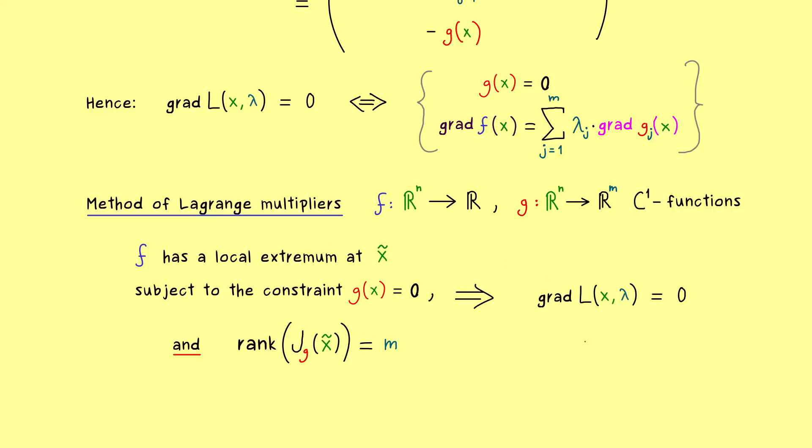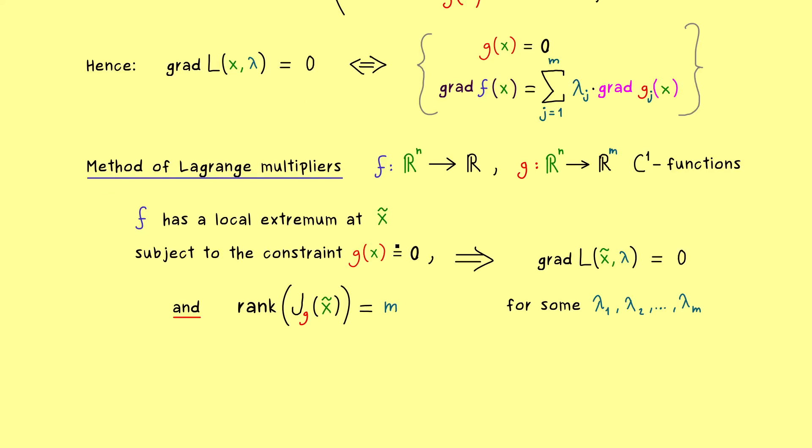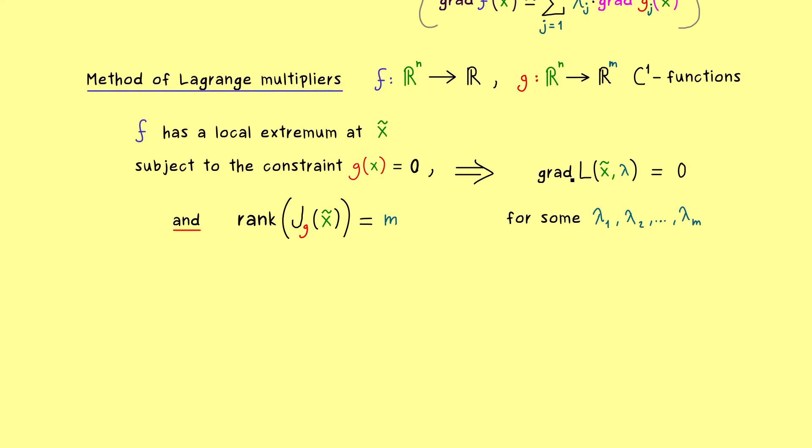In fact, this then implies that the gradient of the Lagrange at the point x tilde is equal to zero. And as we have shown before, we just have to find suitable Lagrange multipliers, such that this equation is satisfied. And that's it. This is the method of Lagrange multipliers, where we use the Lagrange function. So this is the version you definitely should remember. And it's also helpful to have a procedure in mind.